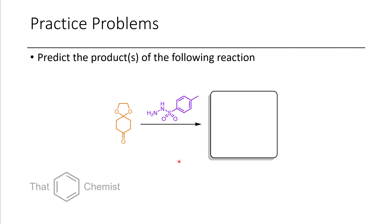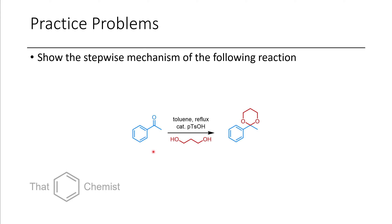For practice for this lecture, I want to assign two problems. First, show what product forms when you treat this compound with tosylhydrazine. Additionally, show the mechanism stepwise of how we convert this ketone into this ketal using this diol. With that, I hope this lecture has been really helpful. If you have any questions or comments about this video, please leave them below, and I hope you have a great day.